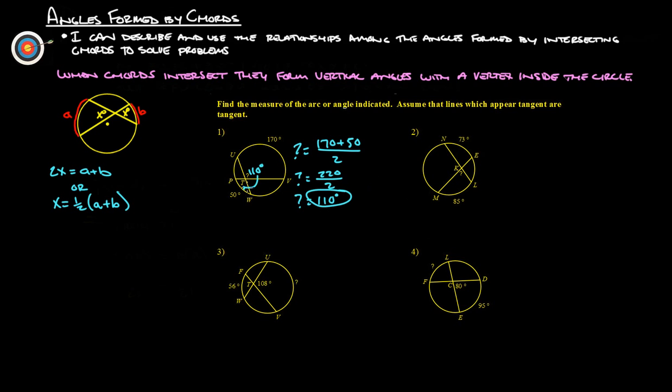Okay, this one over here. Alright, this one here, find question mark. Question mark is going to equal the average of these two arcs here. So 73 plus 85 divided by 2. Alright, so we add those together, and that's 158 over 2. So we take half of 158, half of 150 is 75, plus another 4 is 79 degrees.